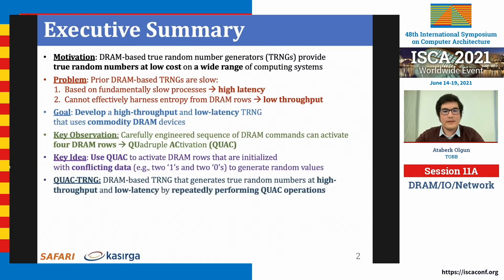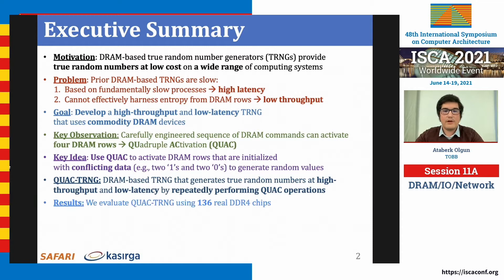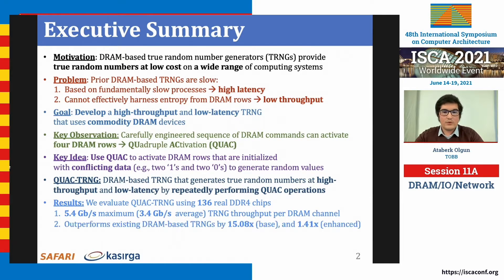Our key idea in developing QoAC-TRNG is to repeatedly perform QoAC operations on DRAM rows initialized with conflicting data, and post-process the results using a cryptographic hash function to generate true random numbers at high throughput and low latency. We evaluate QoAC-TRNG using 136 real DDR4 chips from 17 DDR4 modules, and show it achieves up to 5.4 gigabits per second throughput per DRAM channel, outperforming state of the art by 15 times for base and 1.4 times for throughput-optimized configurations.